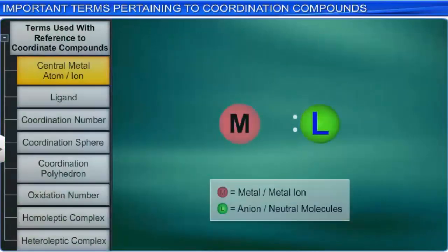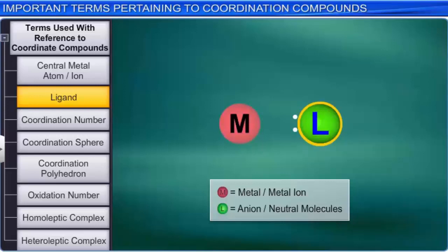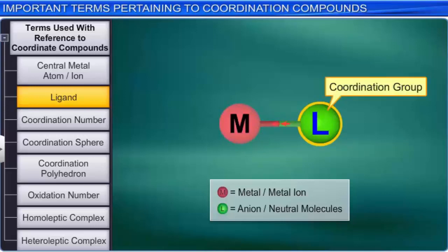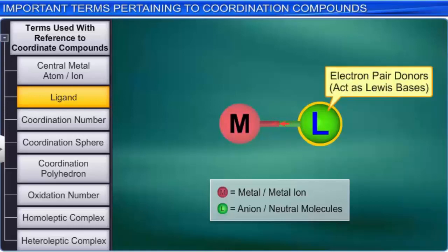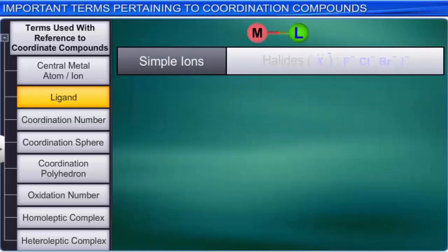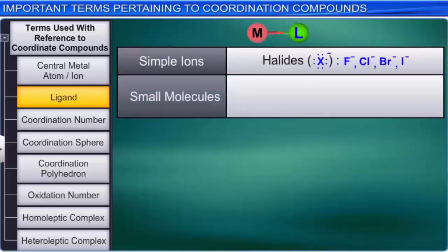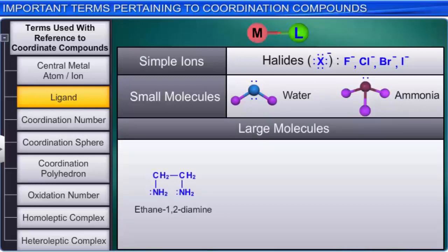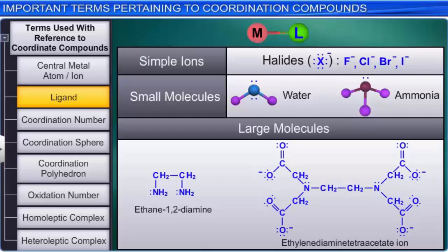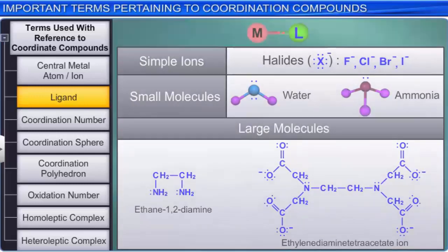Another important term is ligand. A ligand is any atom, ion, or molecule capable of donating a pair of electrons to the central atom. A ligand is also known as a coordination group. As ligands are electron pair donors, they act as Lewis bases. Ligands may be simple ions such as halide ions, small molecules such as water or ammonia, or large molecules such as ethane-1,2-diamine or ethylenediamine tetraacetate ion. The number of atoms in a ligand that bind to the central atom in a complex is referred to as denticity.